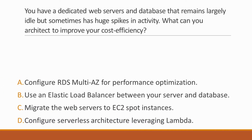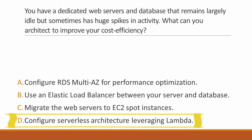Next question: You have dedicated web servers and a database that remains largely idle but sometimes has huge spikes in activity. What can you architect to improve cost efficiency? Options: A. Configure RDS Multi-AZ, B. Use an elastic load balancer, C. Migrate web servers to EC2 spot instances, D. Configure serverless architecture leveraging Lambda. Correct answer is option D, because using Lambda removes the need to run dedicated web servers, and there will be no charge when services are not running.